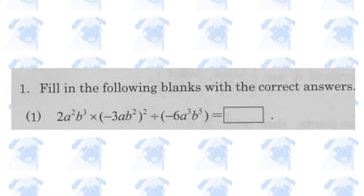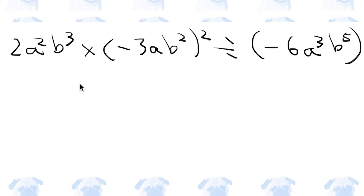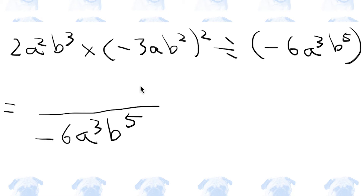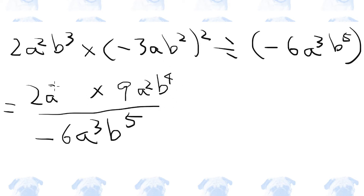Question 1. We basically have to simplify this expression. Let's move this part to the denominator, then square this part. Minus times minus is plus; 3 squared is 9a squared b to the 4th power, times 2a squared b cubed.